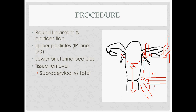Always be careful not to hit the ureter. Once the upper and lower pedicles are done, the uterus is disconnected from everything except its attachment to the vagina. For tissue removal, if you are leaving part of the cervix — a supracervical hysterectomy — you cut above the cervix, close that, and then remove the uterine tissue through the ports.